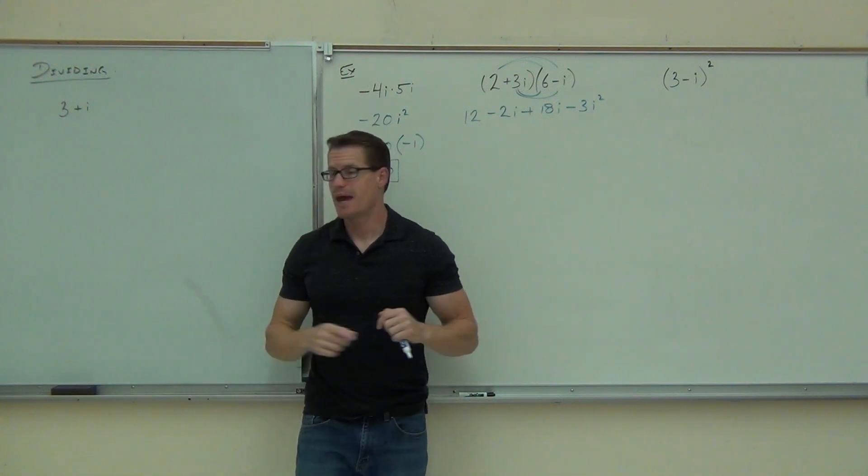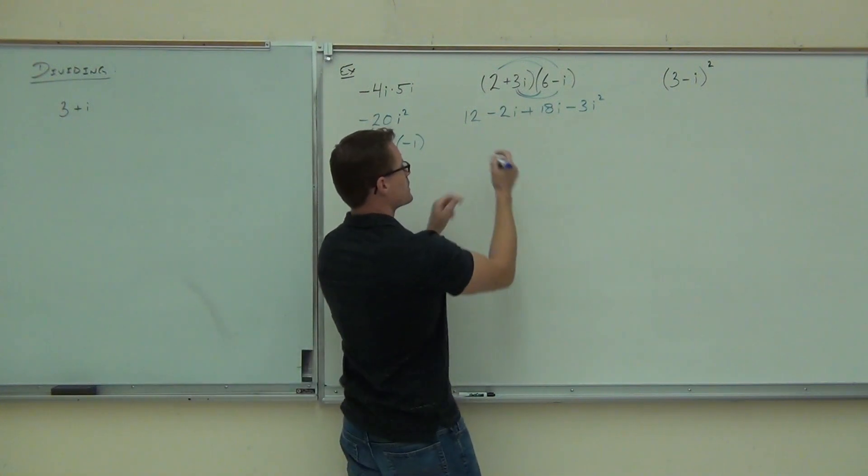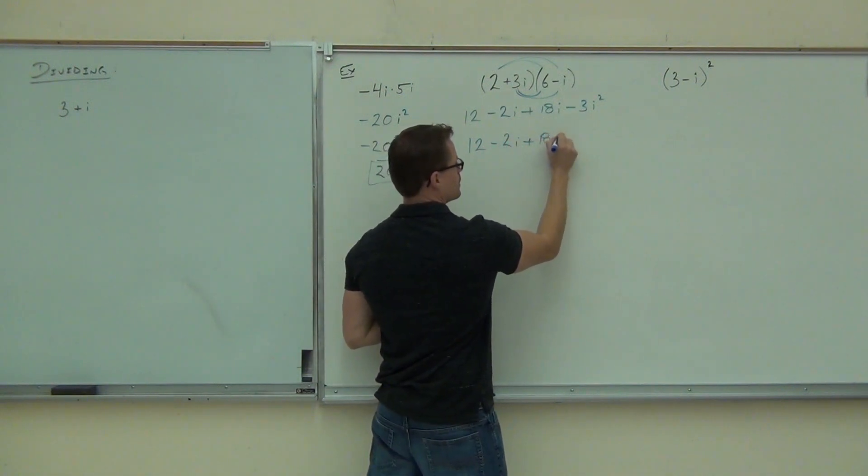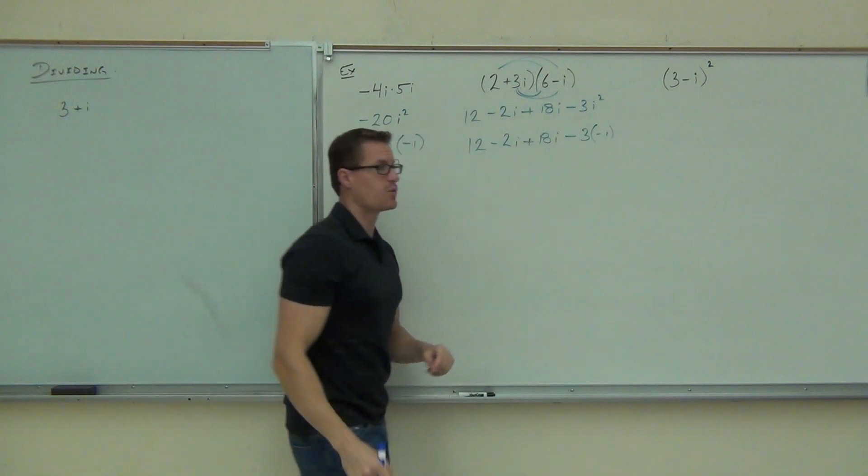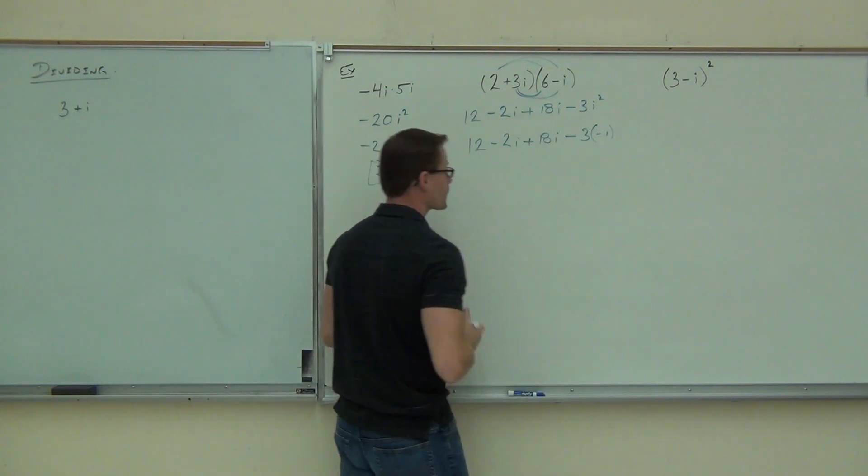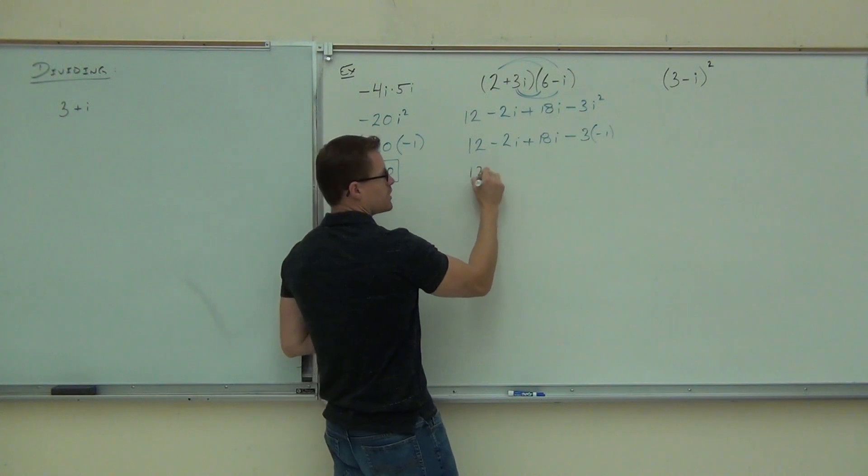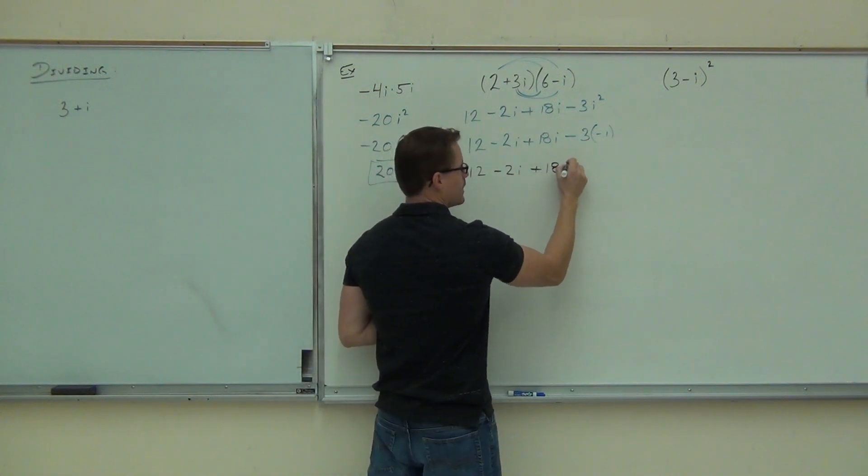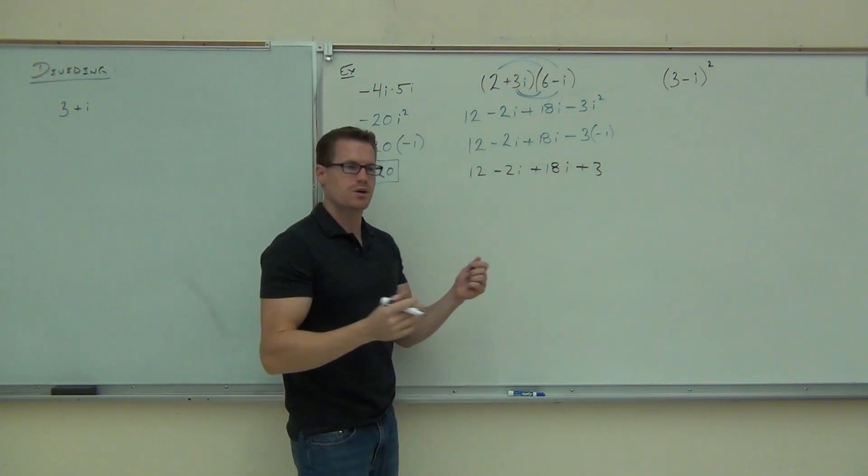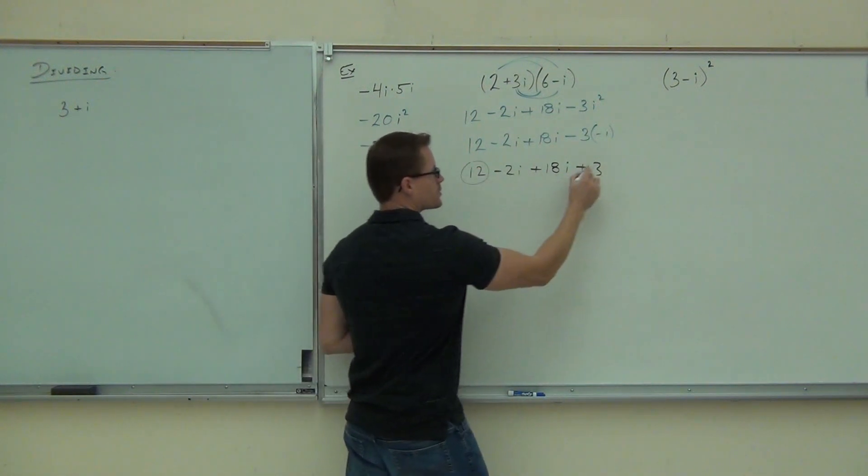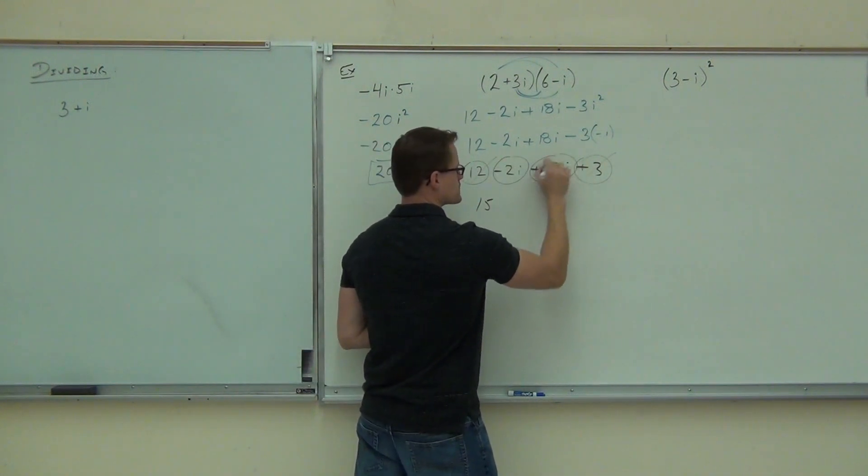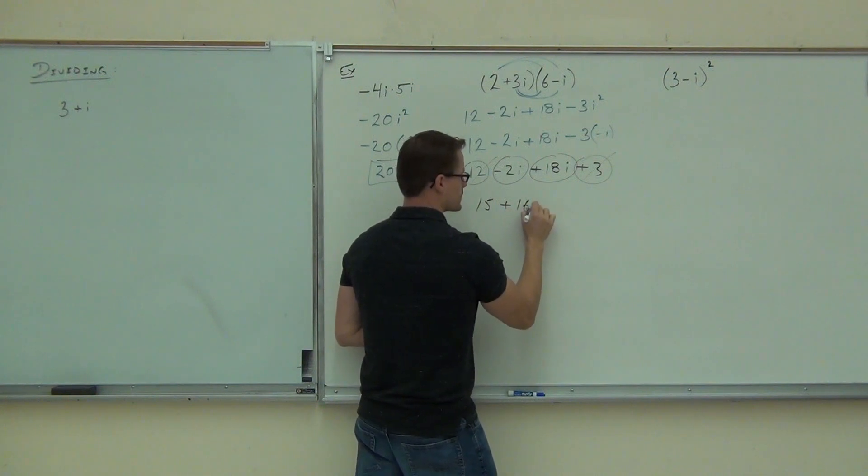We'll change any i squareds that we might have. Here, I can't change these things. I'm not going to even touch them yet really. But I am going to change the i squared into a negative 1. That's our definition, we need to stick with that. So really what we have is 12 minus 2i plus 18i and then plus 3. Do you see where the plus 3 is coming from? We'll combine like parts. Real parts come first.